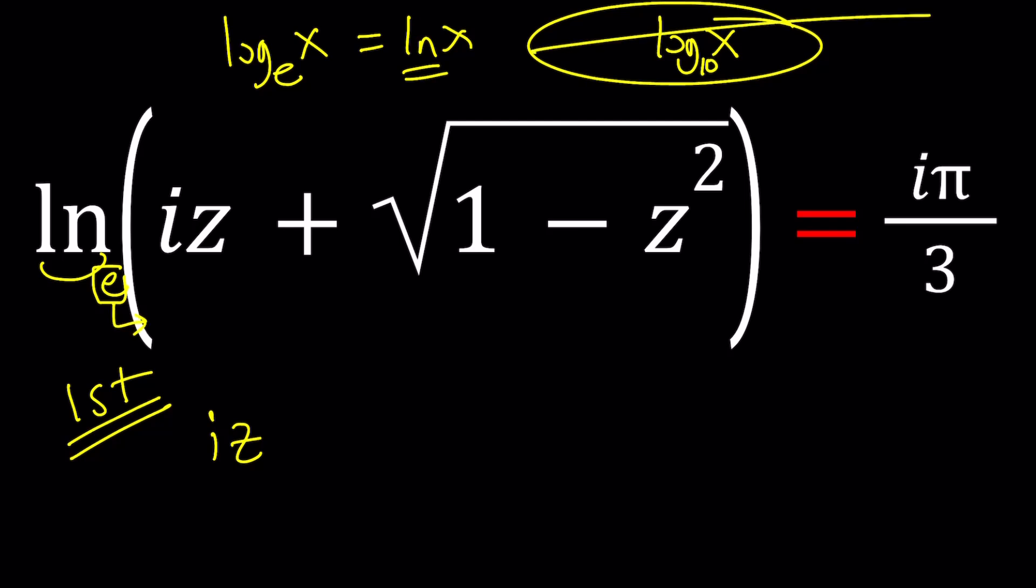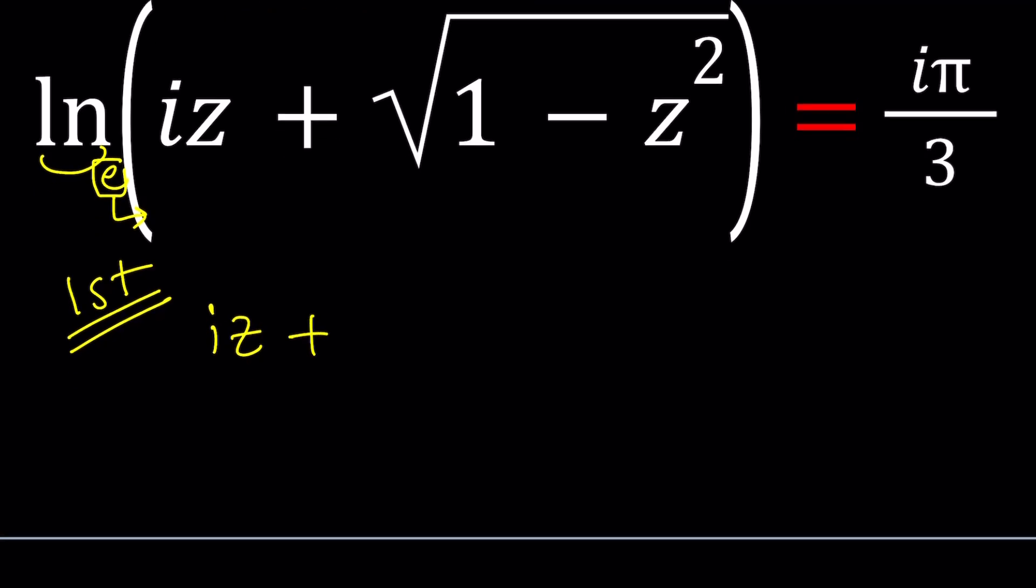Now let's get back to the problem. Using the definition of natural log, we can basically write what's inside the log as e to the power, notice that this is the base, iπ/3. This is awesome because it really simplifies the problem.